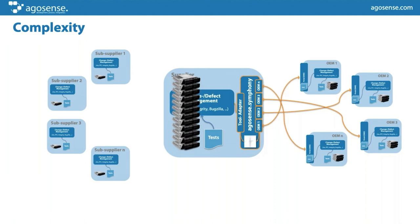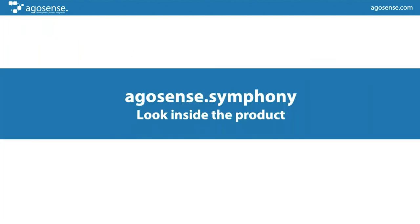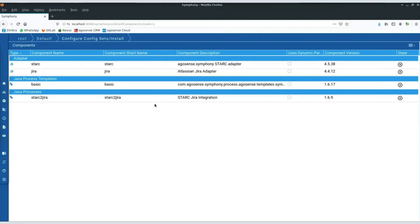Now I've finished the first part — the overview — and we will now have a look inside AgroSense Symphony. We will not show you a live connection running between Stark and another system, but we will show you the configuration options and how this looks in AgroSense Symphony. After that we will talk about the plan to get a Stark connection and go into the Q&A session. I will now switch the screen to Christian's machine.